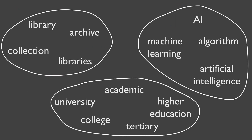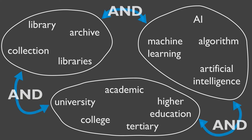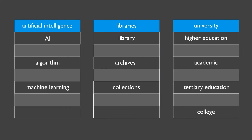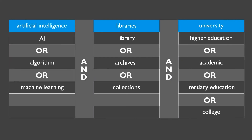One way to think about using search operators is that you should put AND in between your concepts and OR between your synonyms. Drawing a diagram like this, or a table like this, can help you keep track of your keywords and which operator to use.